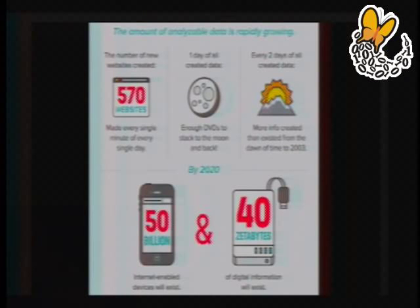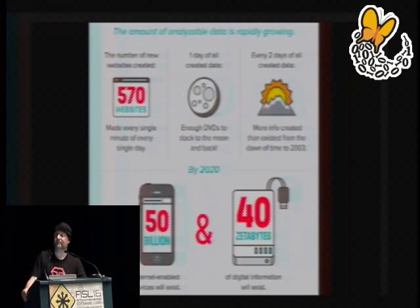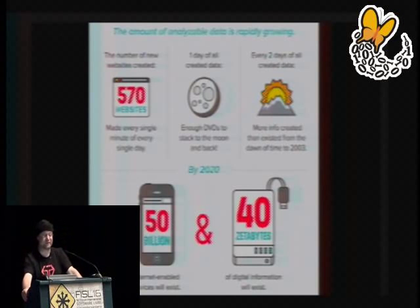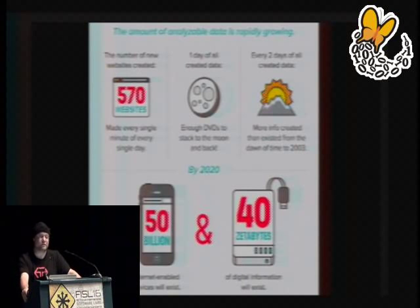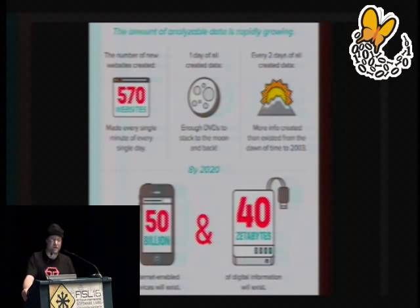The amount of analyzable data is rapidly growing right now. Who can tell me what a zettabyte is? A zettabyte is actually one trillion gigabytes. And by 2020, we'll have something between 3.2 and 5 zettabytes in our digital universe now — but by 2020 that number is going to grow to 40 zettabytes. That's 40 trillion gigabytes in the digital universe.